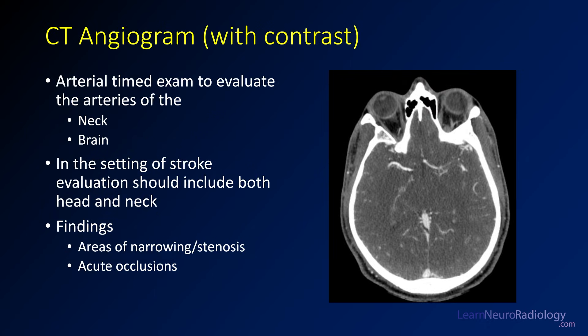Next, you'll move on to a CT angiogram — an arterially timed exam to examine the arteries of the neck and brain. In stroke evaluation, you want to include both head and neck, from the aortic arch up through the top of the brain. You're looking for areas of narrowing or stenosis, or acute occlusions or truncations of vessels, because thrombus can prevent blood from getting downstream. That's the key finding — a source of ischemia.